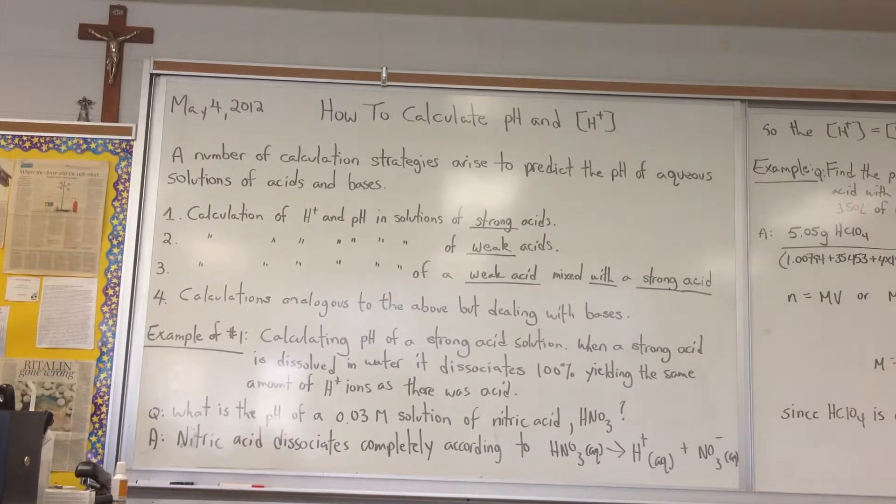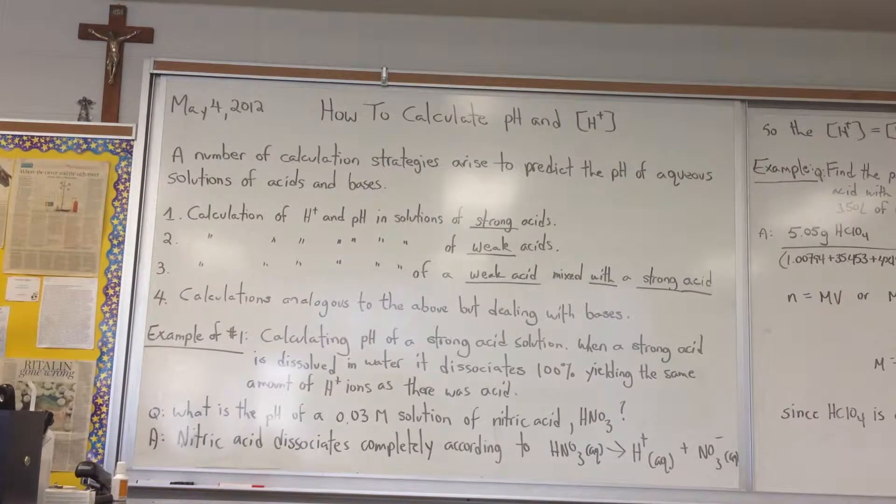The first example we're going to look at is how to calculate the pH of a strong acid solution. When a strong acid is dissolved in water, it dissociates 100%, yielding the same amount of hydrogen ions as there was acid.